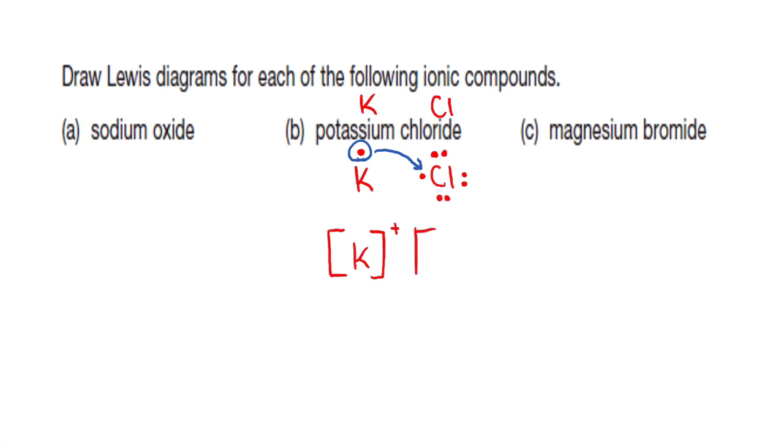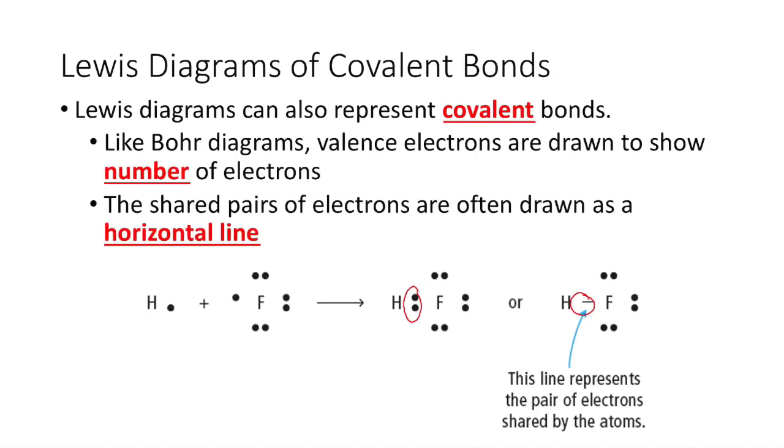And our chlorine, which now has a full eight valence electrons - it's happy and stable. Because it has gained an electron, it now has an overall minus charge. Check for your balances. Positive one plus negative one is zero, so overall neutral. We're good. We've done this correctly. So now go through and do your next examples, and then you can move on.